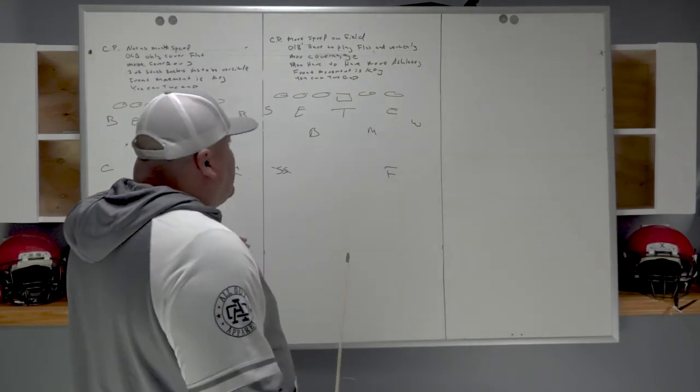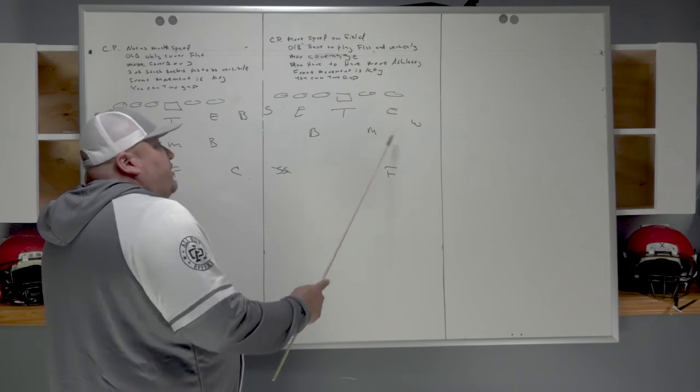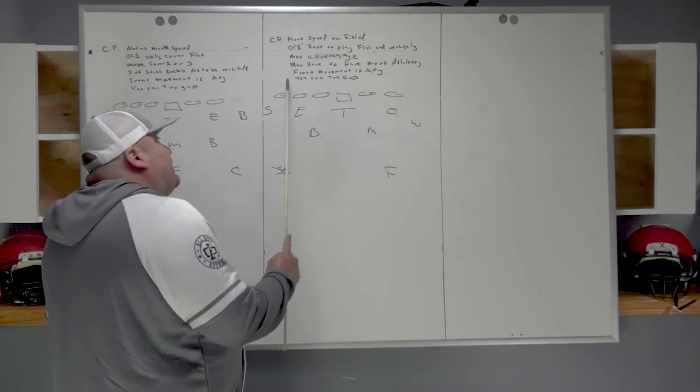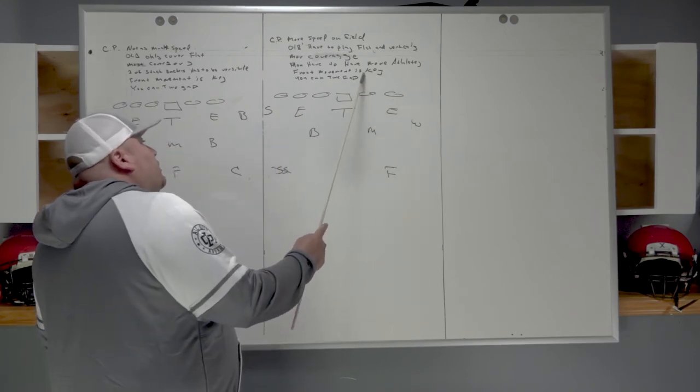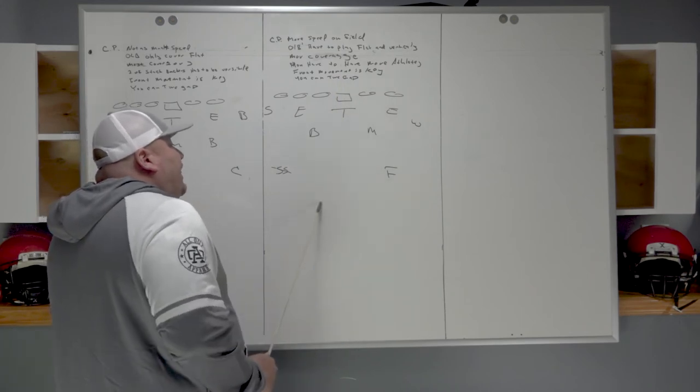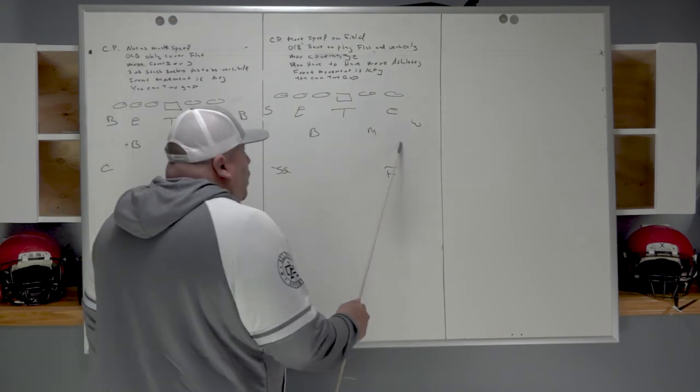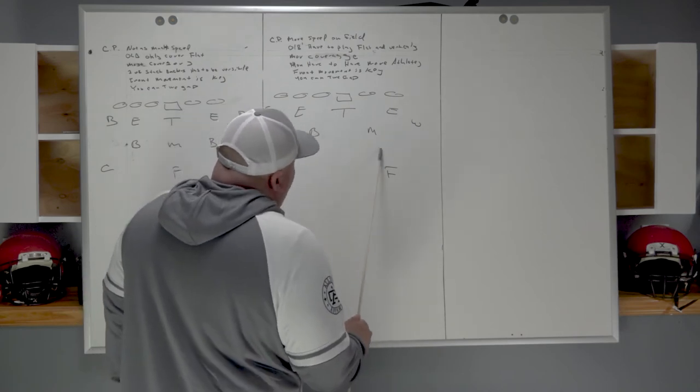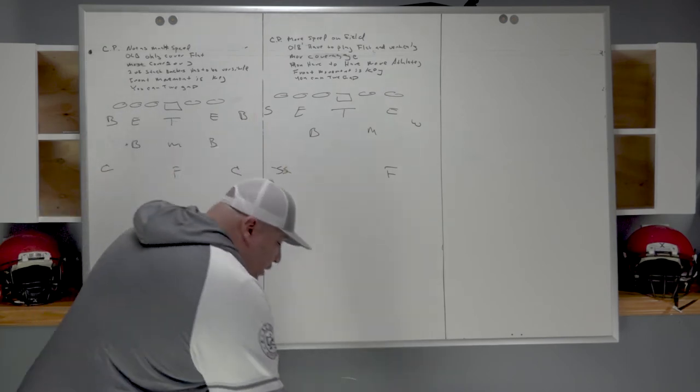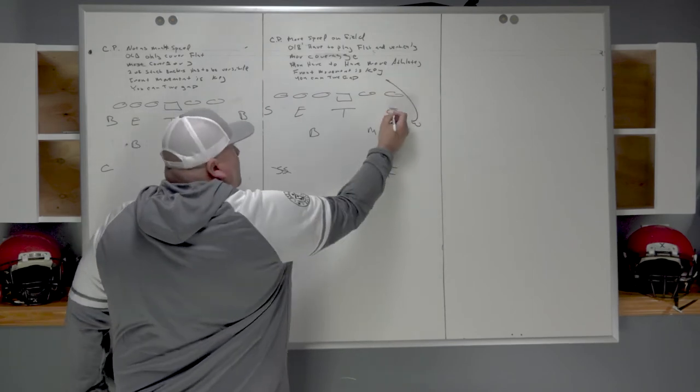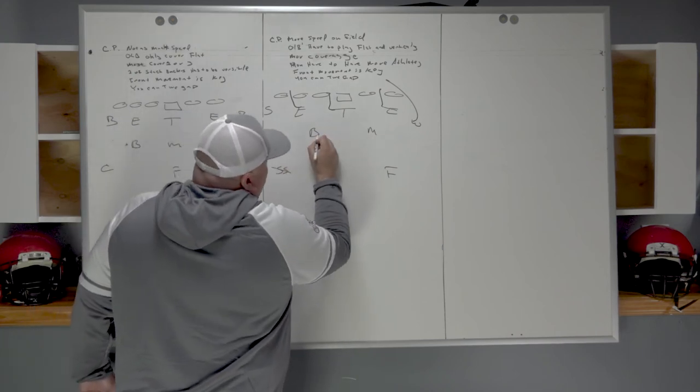Let's say we want to get to a four-man stuff. We got to say Will three. Will three is going to tell the Will he's coming, they're moving away, and everybody will get their coverage according. On Will three situation, Will's coming, we got free safety to go to the middle of the field. We got a hook to curl player, a curl to flat player, a hook to curl player, and a curl to flat player in the strong safety.